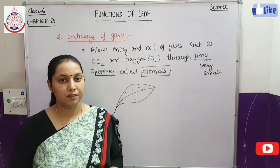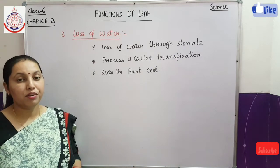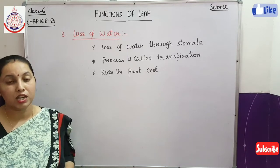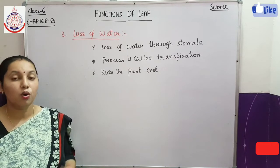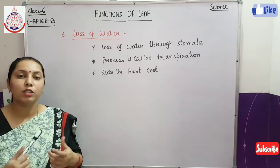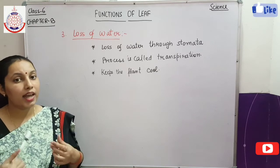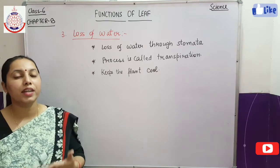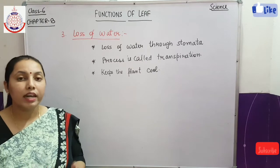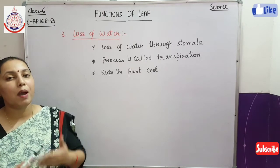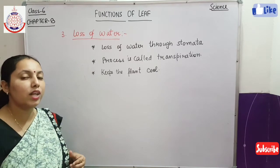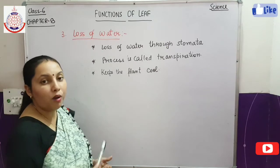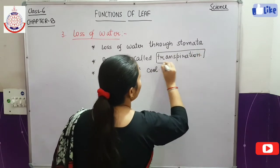Now let's discuss the third function. The third function of the leaf is the loss of water. We have already studied in the chapter on water that there is transpiration. What is transpiration? It is the loss of water from the plant to the atmosphere. This transpiration happens from the surface of the leaf. On the surface of the leaf there are very tiny openings called stomata. From the stomata, water evaporates to the atmosphere — the plant's water goes into the atmosphere. There is some loss of water, and this process is known as transpiration.